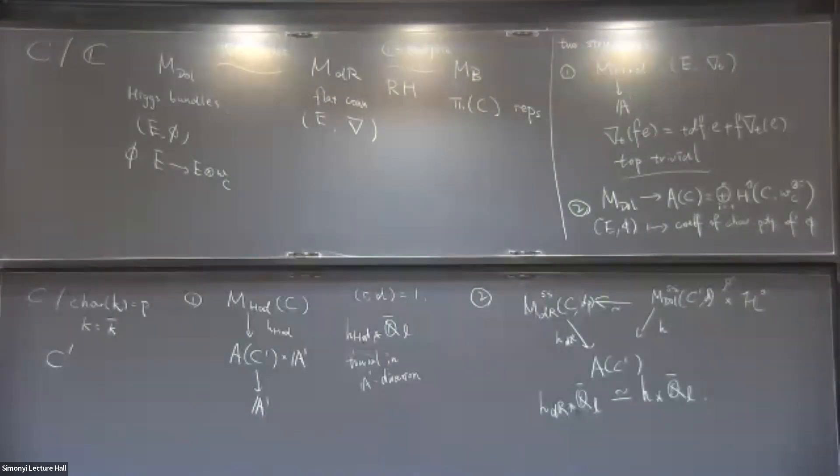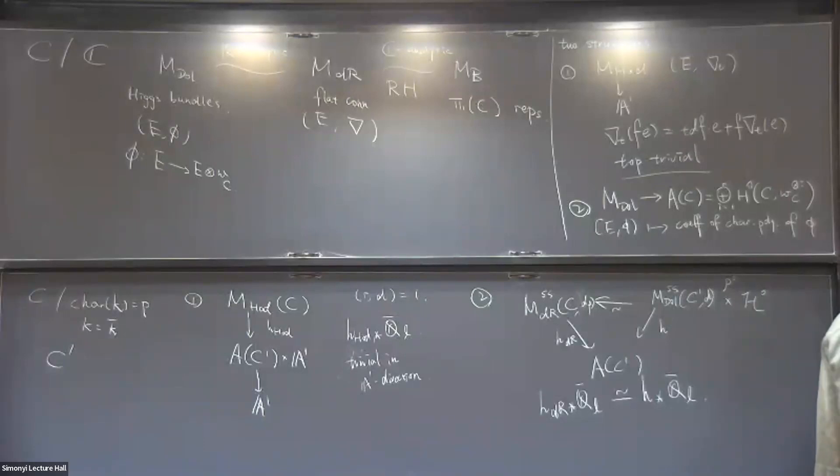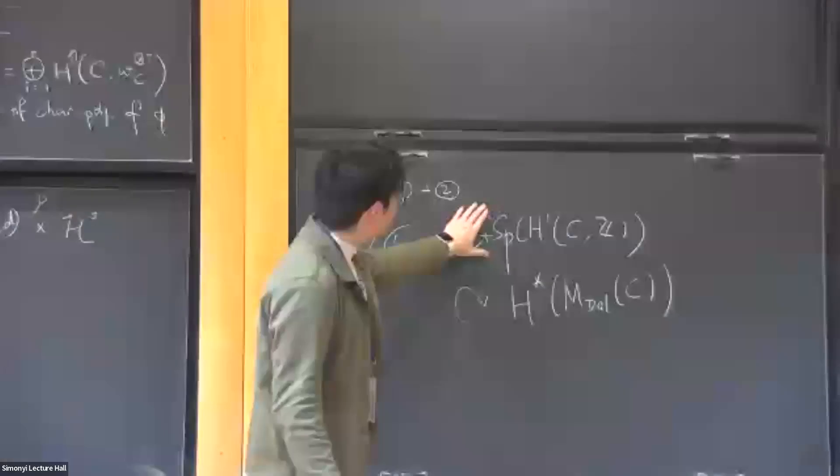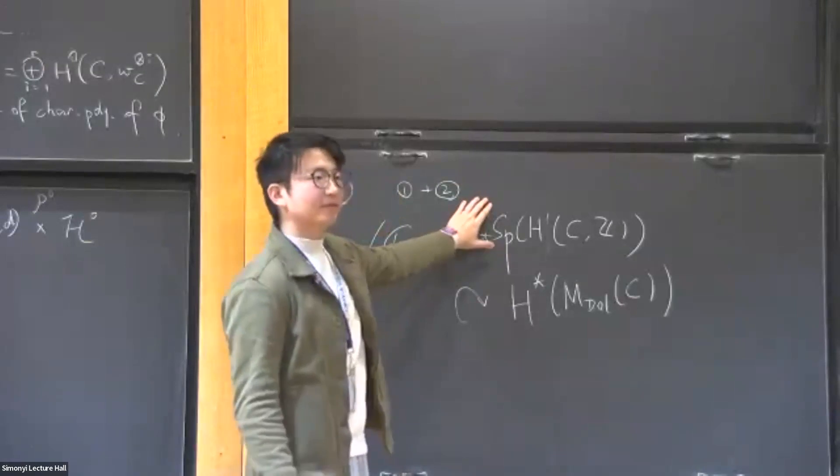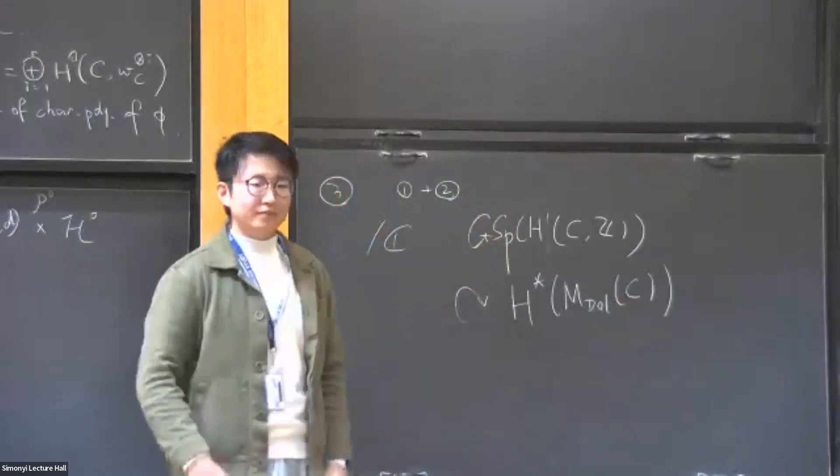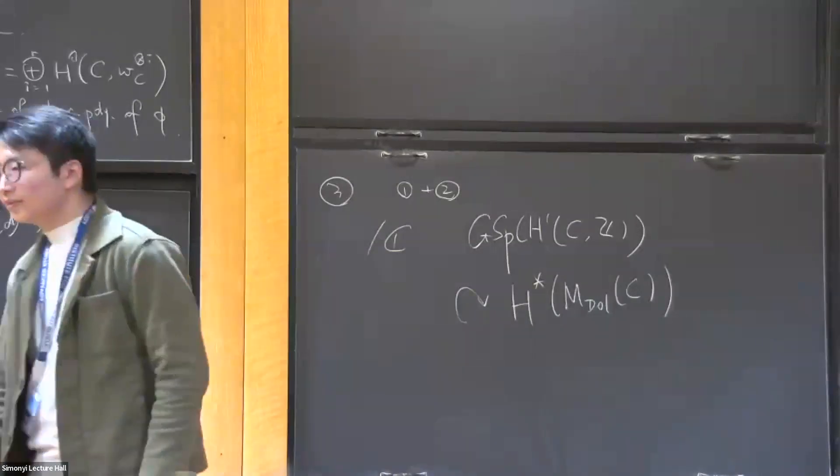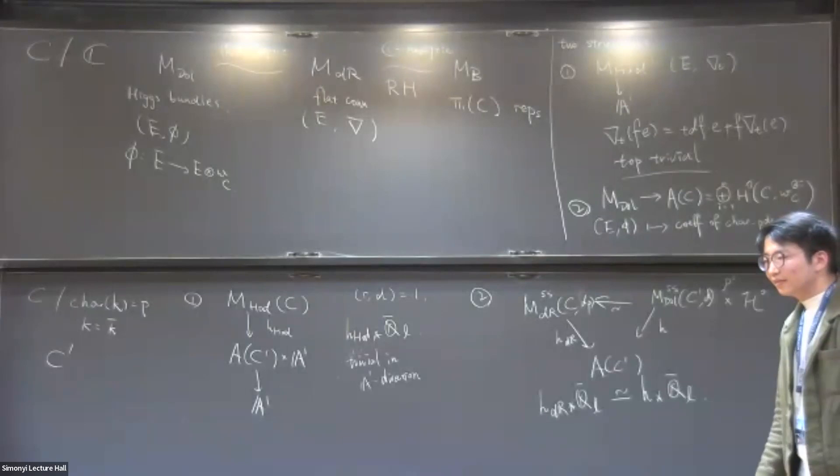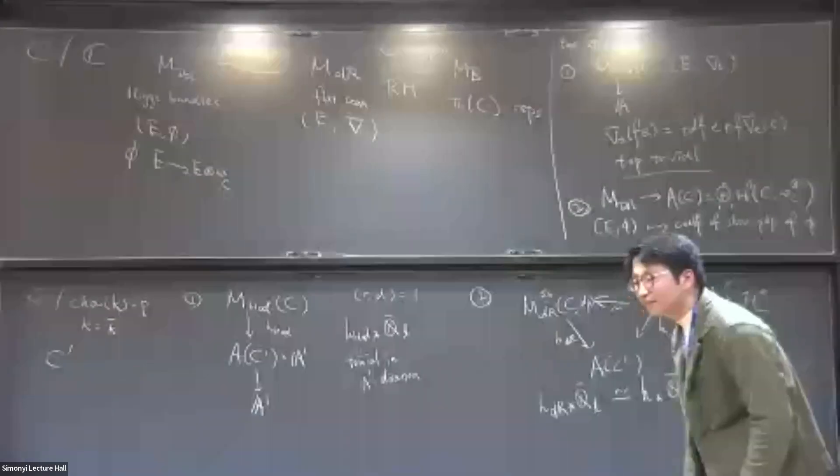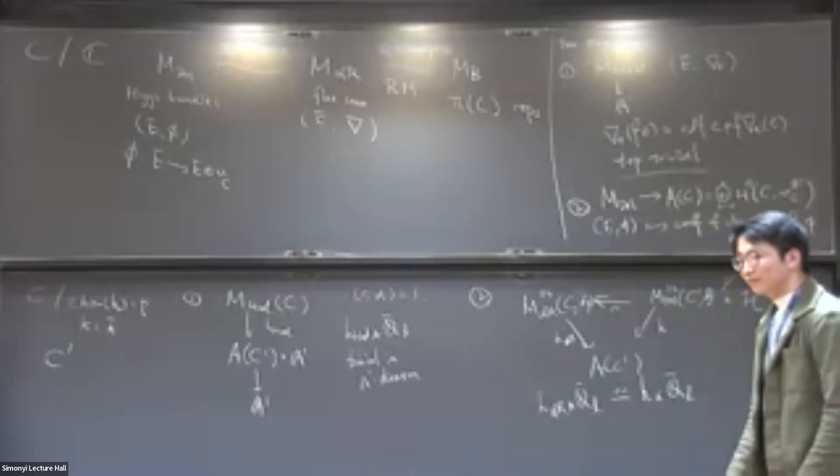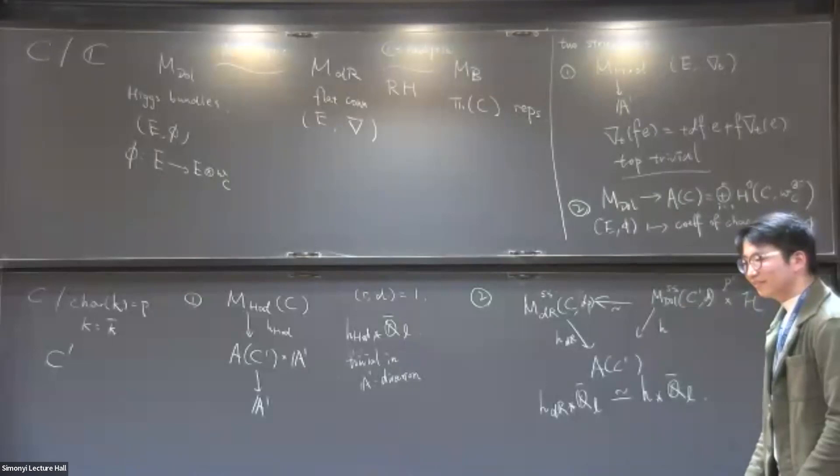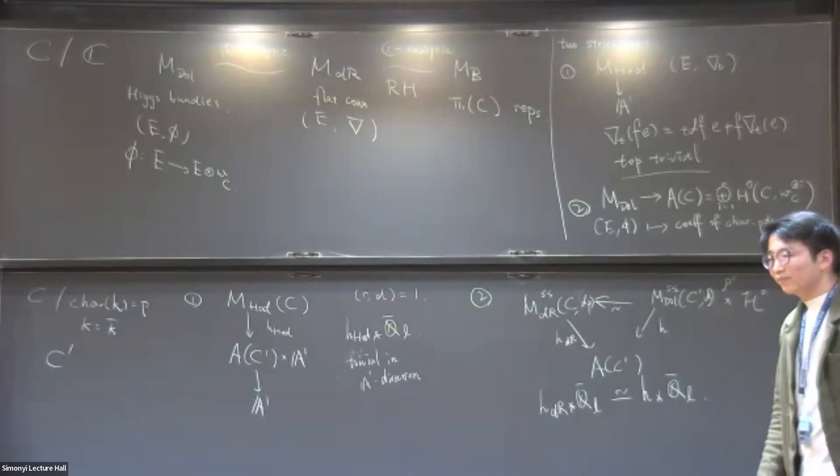So in the Betti moduli space there's also an action of the whole mapping class group. Are these somehow compatible? Yeah, so the SP factor comes from the mapping class group. But it's kind of miraculous that only the group, which is the symplectic group, is acting. Can you express it in terms of the group? I'm not sure. Yeah.